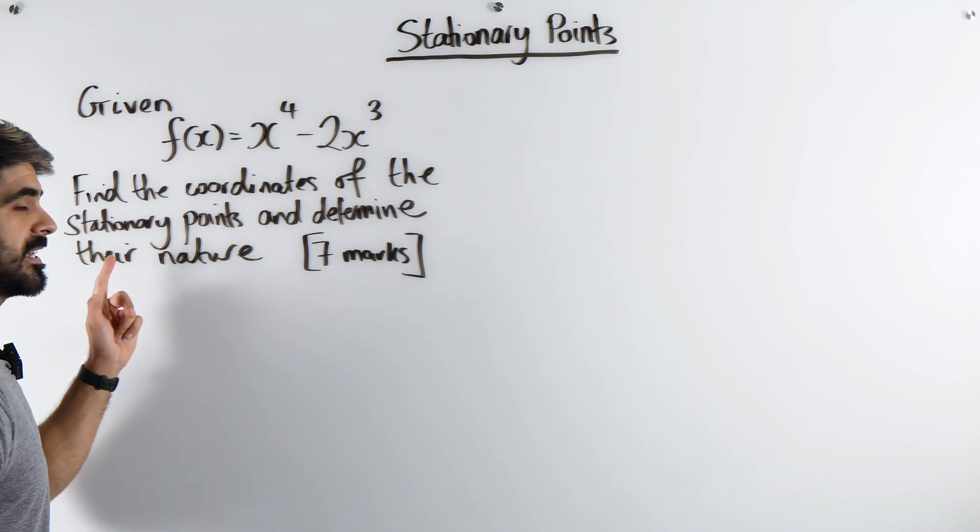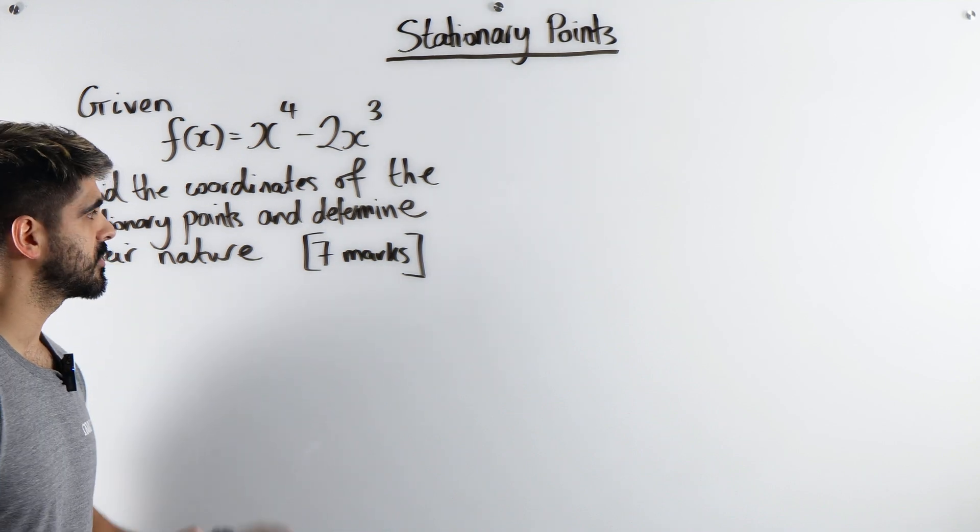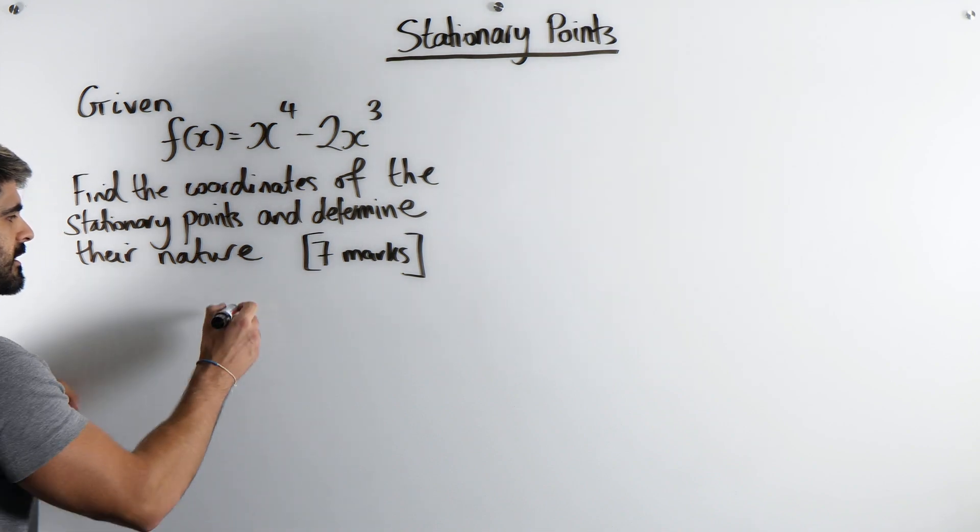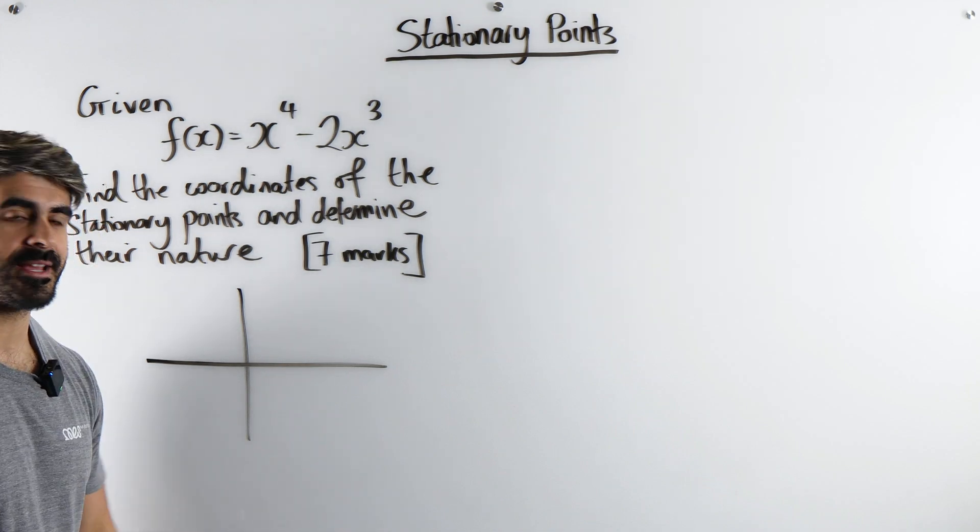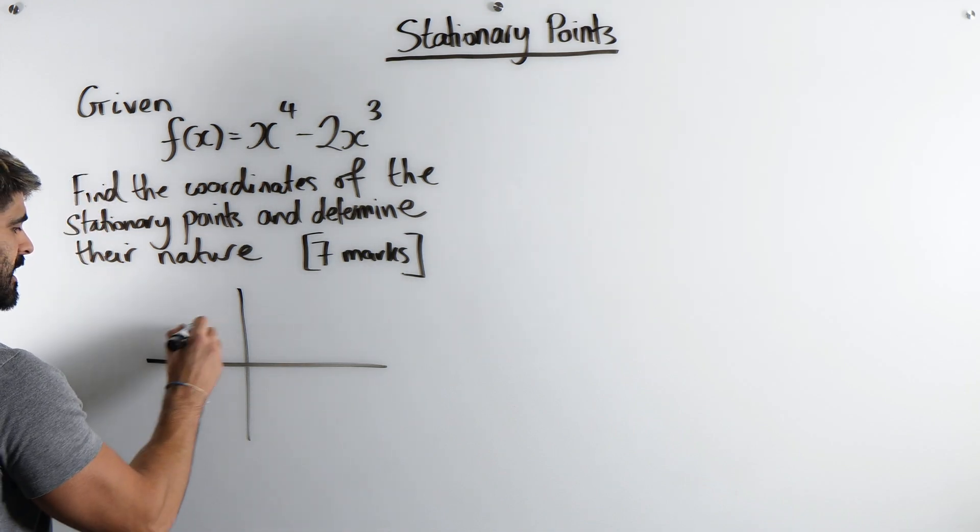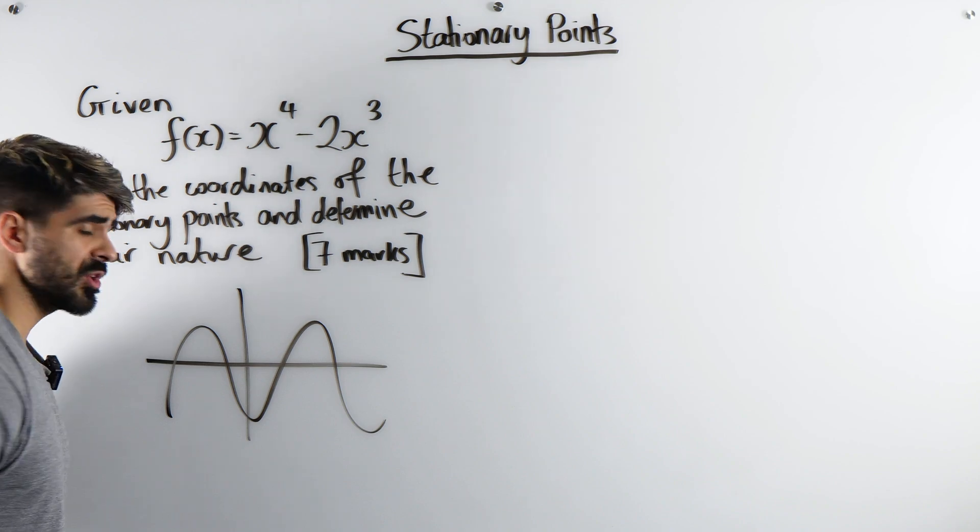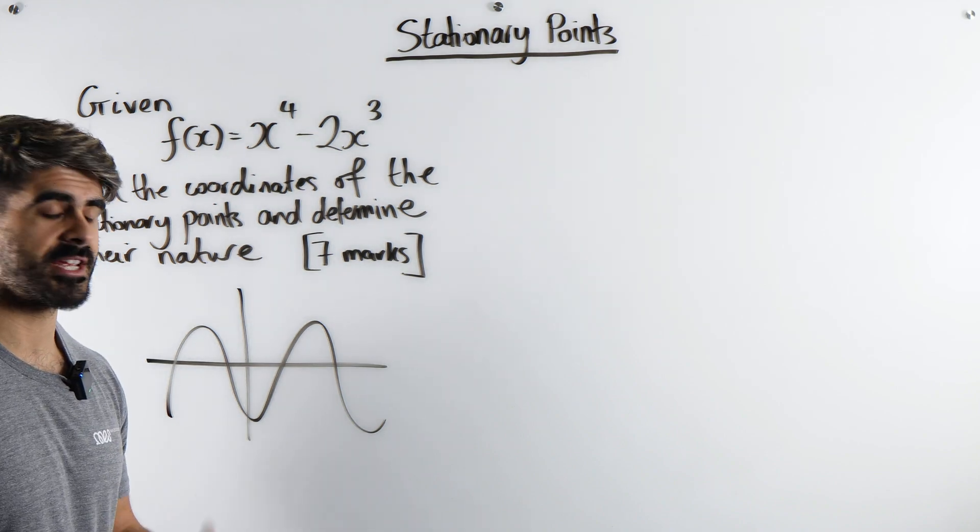Now the first thing is stationary points. What does that mean? Let me give you guys a brief history on what we even mean by a stationary point. So say I had a curve like this, why do we call certain points stationary points?